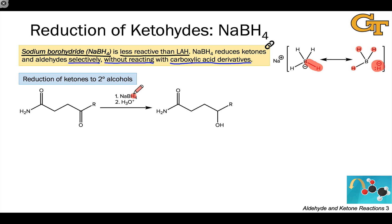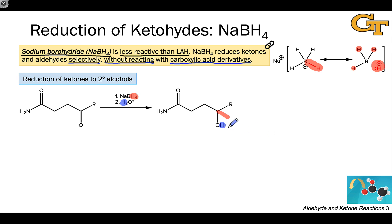NaBH4 is a source of nucleophilic hydrogen, and that nucleophilic hydrogen adds to the carbonyl carbon — here that hydrogen is implied. Acidic workup places an electrophilic hydrogen atom from the acid used in workup on the carbonyl oxygen.